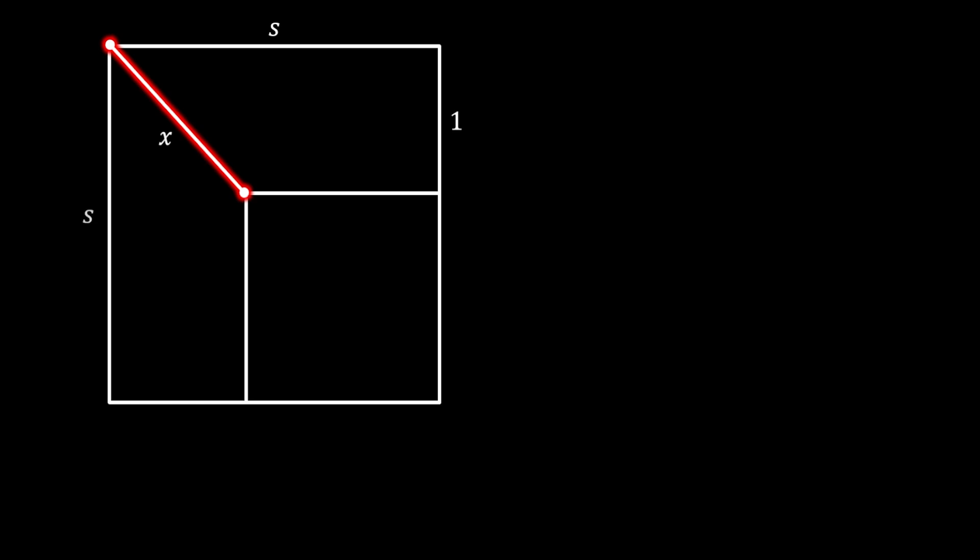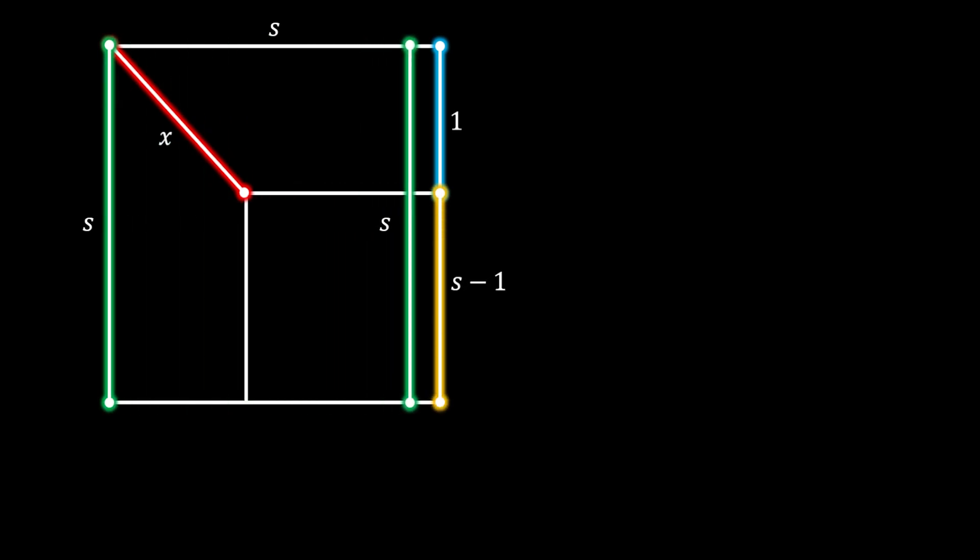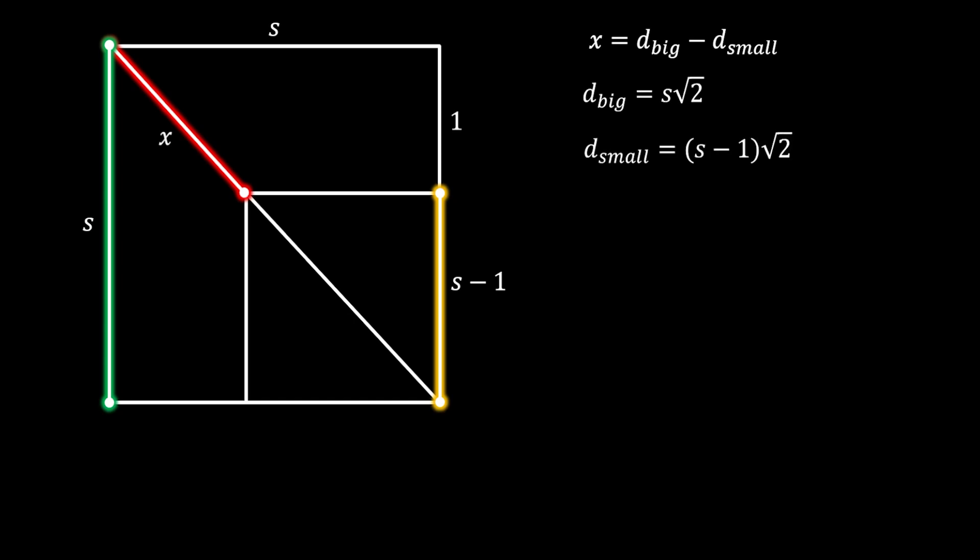Now, if we label the side of our big square as S, and notice that the segment on the top right of this square is now equal to 1, this means that the remaining segment on the bottom right must be equal to the difference between those two or S minus 1. And you can notice that we got the side of our small square. So, if you take a look at the line X, you can see that it actually represents the part of the diagonal. And we can get this length as the difference between the length of the diagonals of our big and our small square.